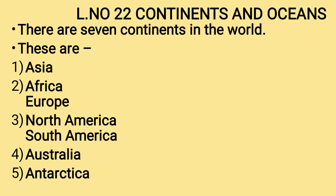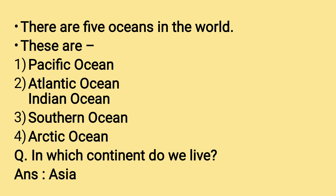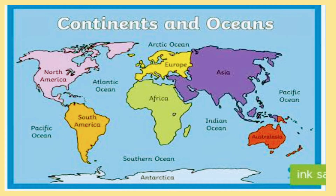These are the 7 continents in the world. And there are 5 oceans in the world. These are Pacific Ocean, Atlantic Ocean, Indian Ocean, Southern Ocean, and Arctic Ocean. Here you can see the picture, or you can see the map, about the continents and the oceans.